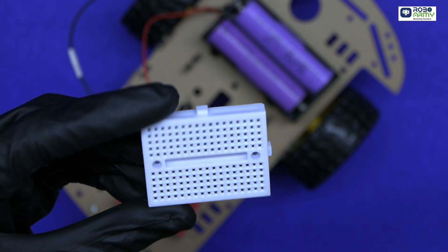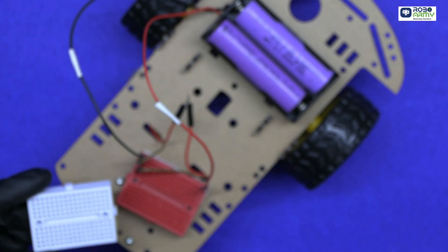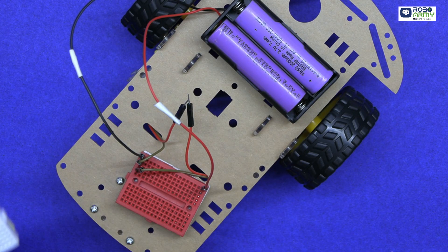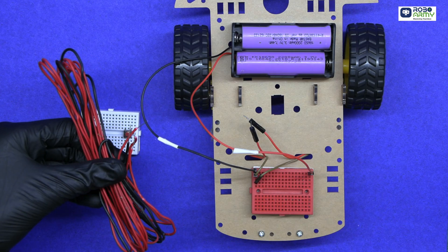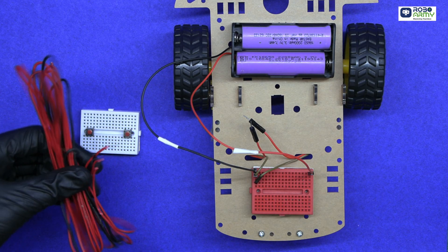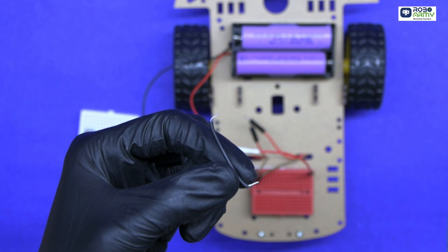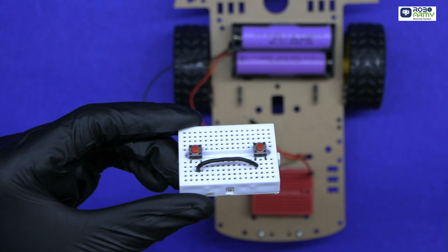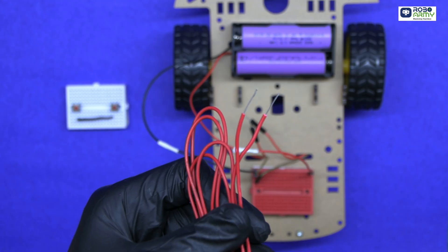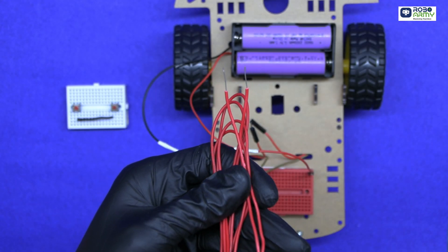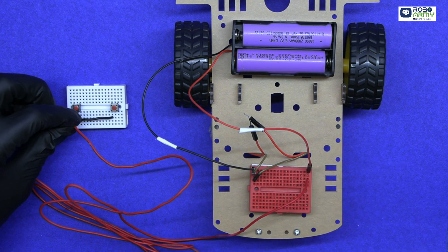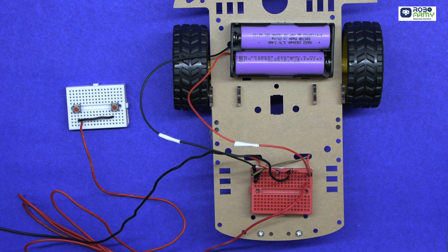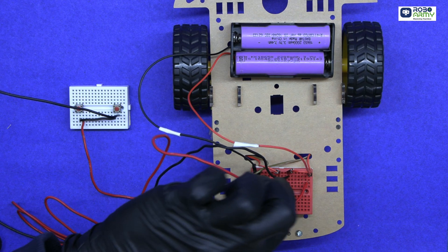Take the second breadboard for remote control. Insert two push buttons in separate rows. Now connect the remote to the robot. Use long wires to link the two breadboards. Take a small piece of wire and connect the inner pins of buttons. Connect one wire between breadboard one's positive row where the red wire of the battery is connected and breadboard two's inner button pins. Connect the remaining wire of motors to the corresponding button's outer pin using long wires.